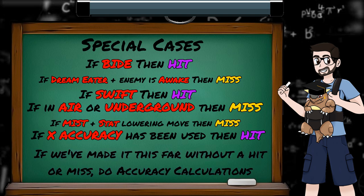And then finally after all of that, if we haven't already missed or hit based on the above criteria, we do the accuracy equation. There's also a bunch of rules around when a substitute is used, but I think there's enough there to warrant its own video.